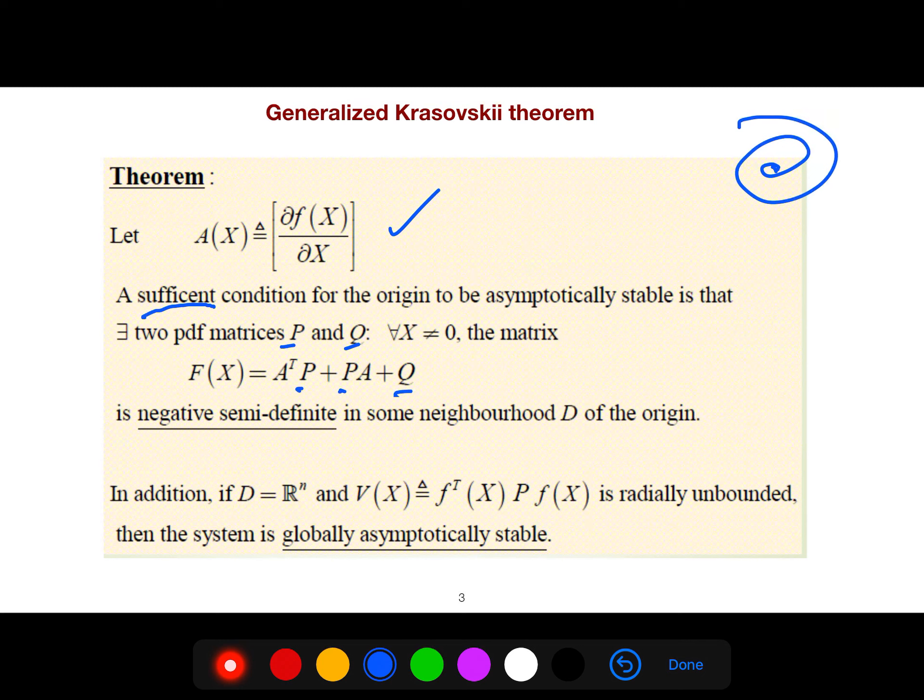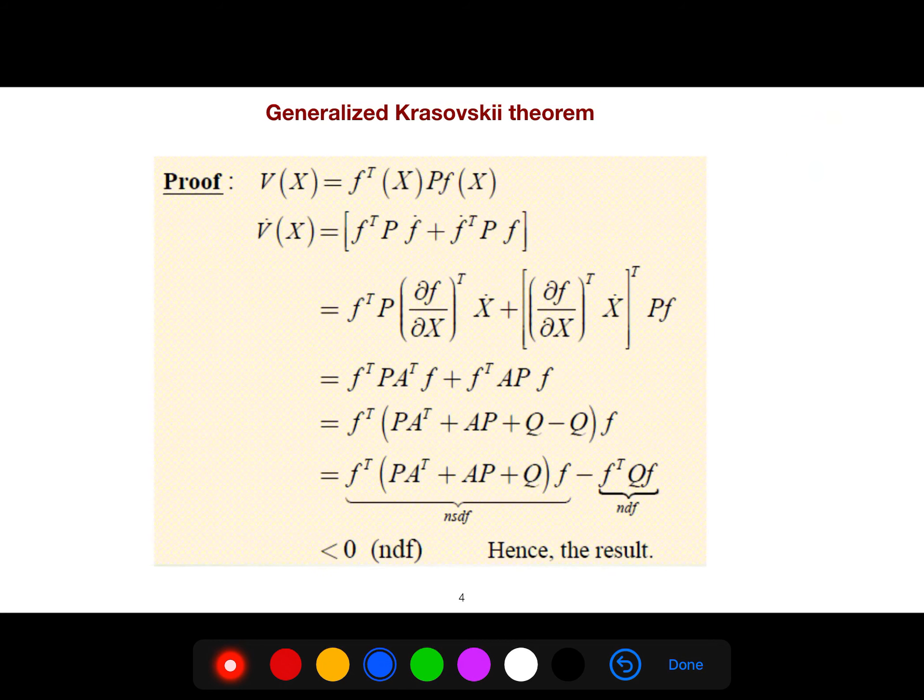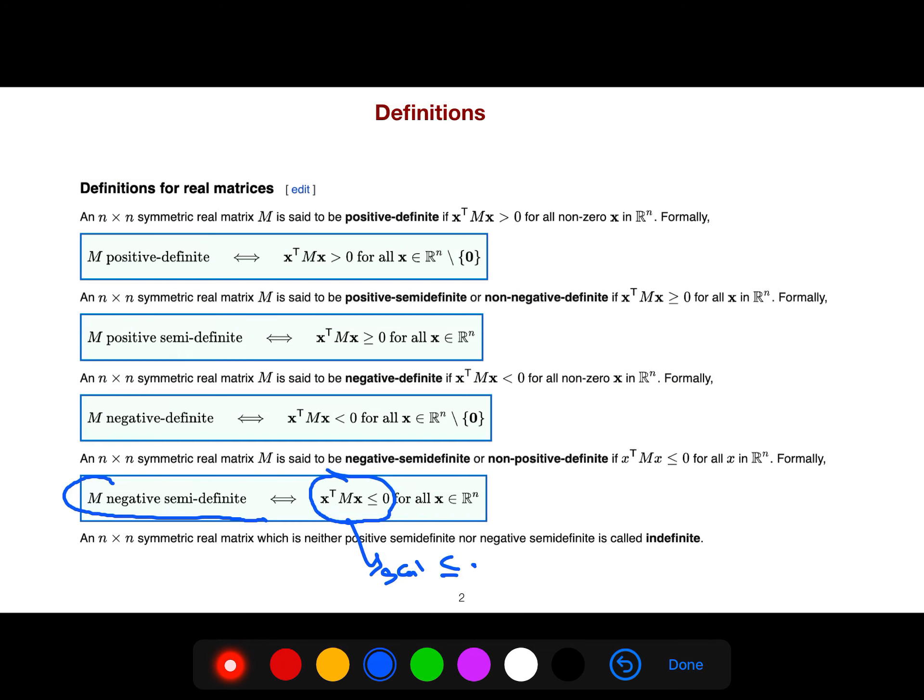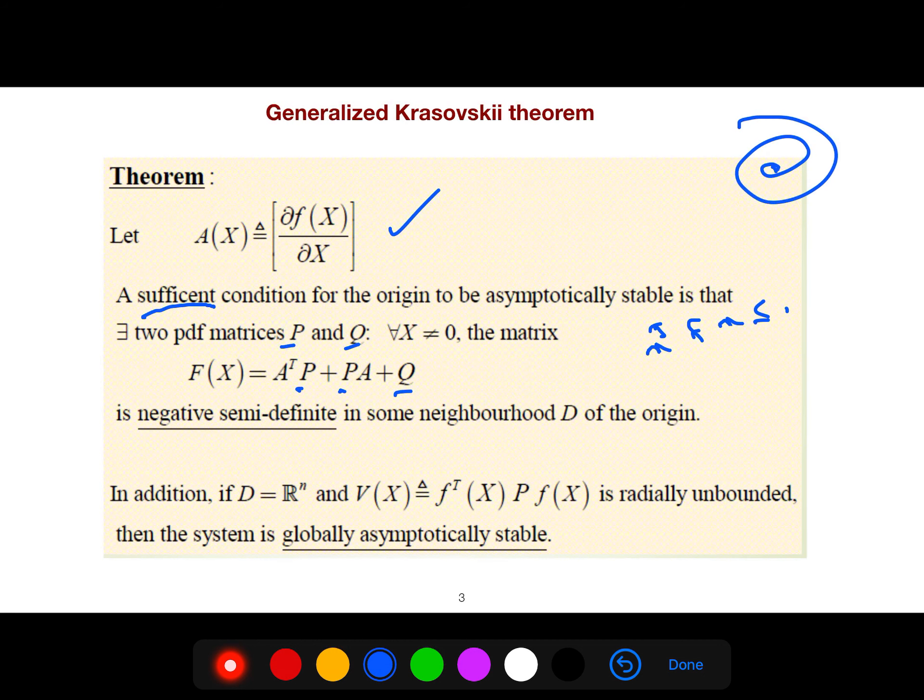It means that x transpose Fx is less than equal to 0. If you look at this, x transpose that matrix should be less than 0. So this is semi-definite.